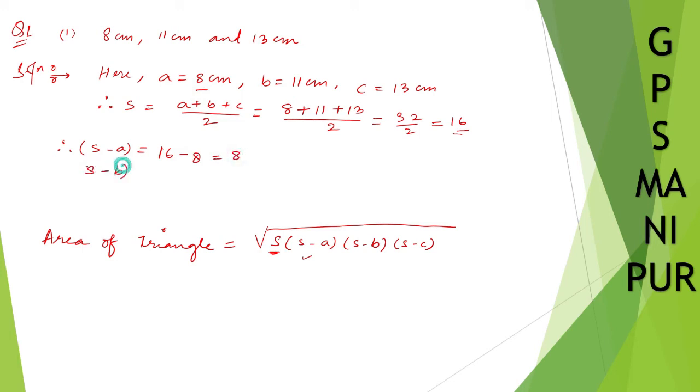S minus B will be equal to 16 minus 11. B is 11, so 16 minus 11 is 5. And S minus C will be equal to 16 minus C is 13. So 16 minus 13 which will be 3.